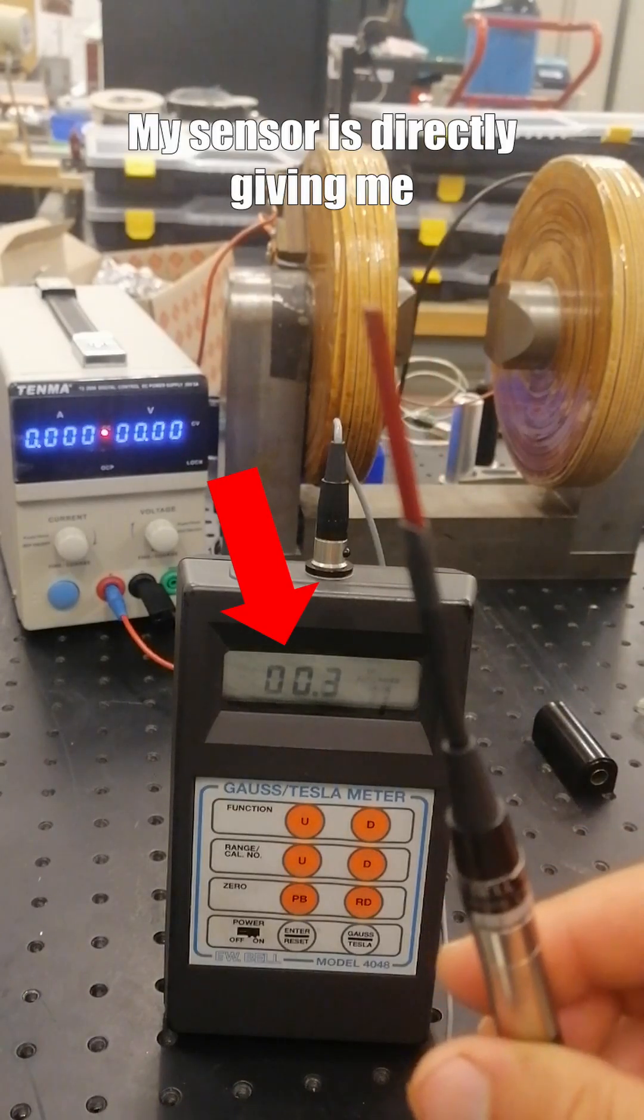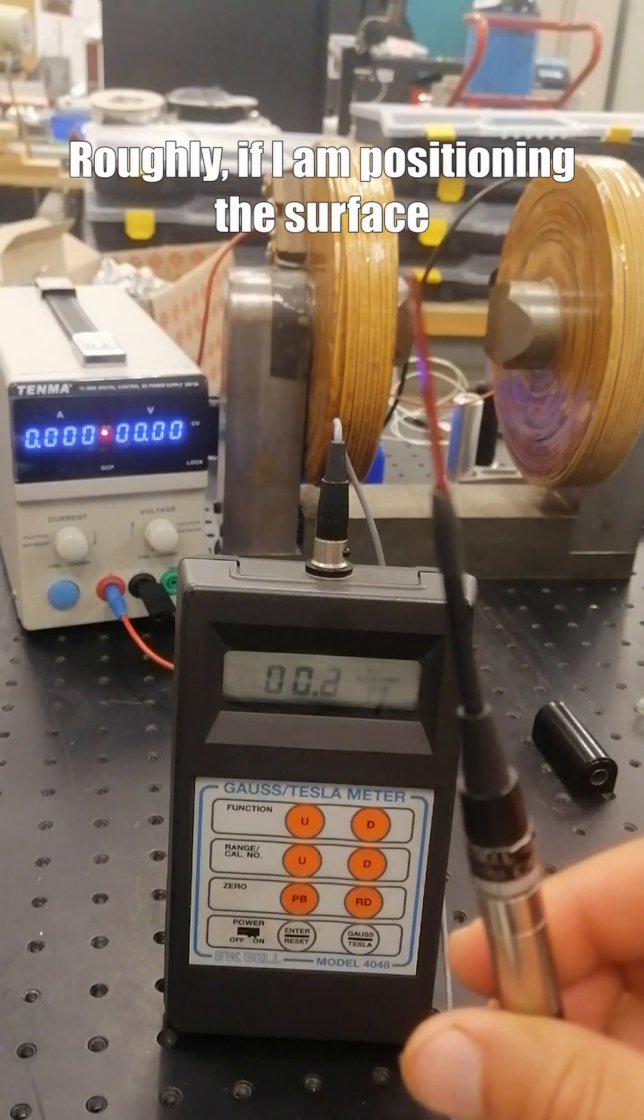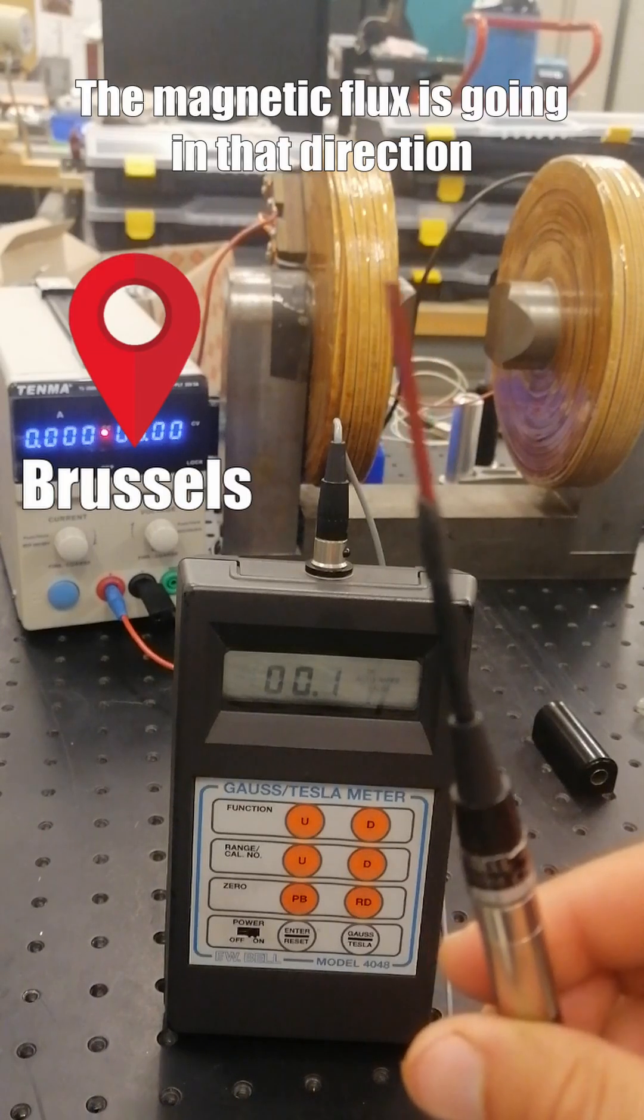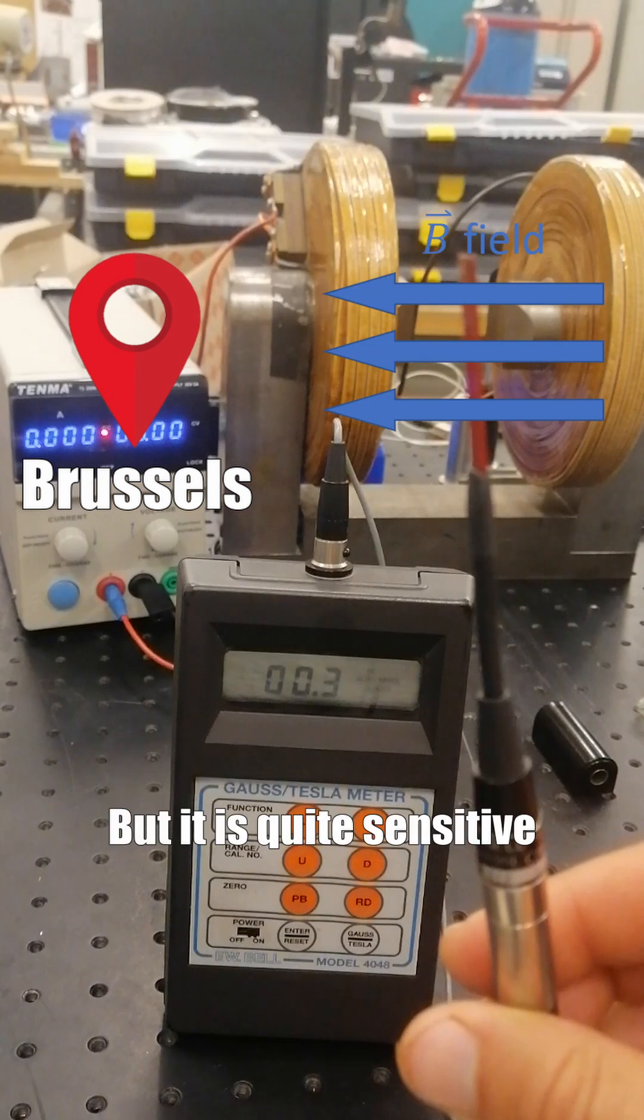My sensor is directly giving me the magnetic field in Gauss. Roughly, if I'm positioning the surface toward Brussels, the geographic north pole direction, the magnetic flux is going in that direction. And I have more or less 0.3 Gauss.